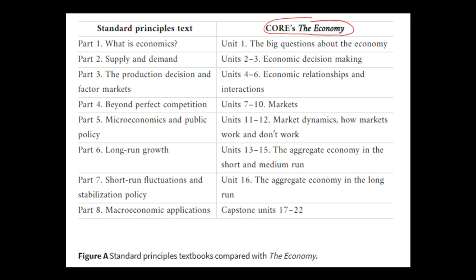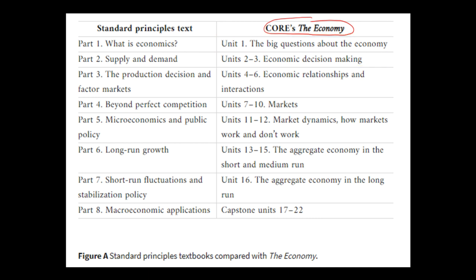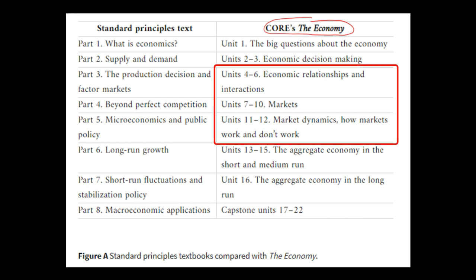Here we can contrast a standard principles text with CORE's The Economy. A standard principles text always begins with 'what's economics and how to think like an economist,' and then goes on to supply and demand. We do something quite different. We start with a really big question about the economy: how did the economy come to look like it does today? We then build up the decision-making process of actors in the economy, beginning with an individual actor taking a decision against a fixed environment — a student deciding how to divide up their time between studying and free time. Having set up the framework for constrained optimization using feasible sets and indifference curves, we then move on to the interaction between agents, social interactions, and strategic behavior. And from there on to markets. So it's actors before markets.